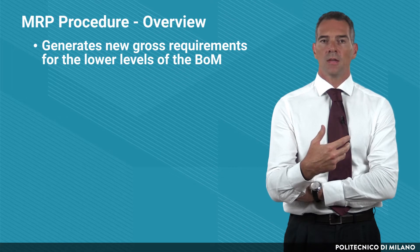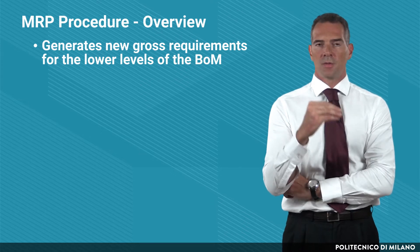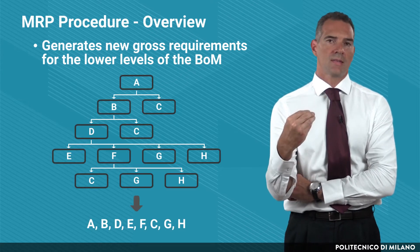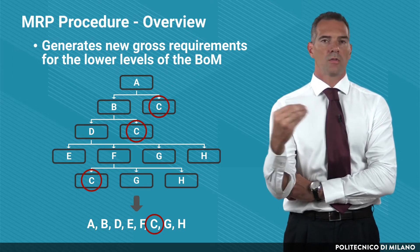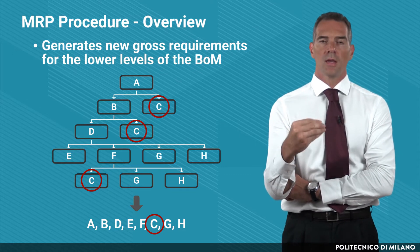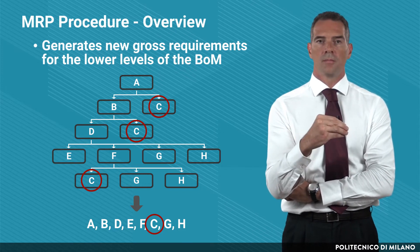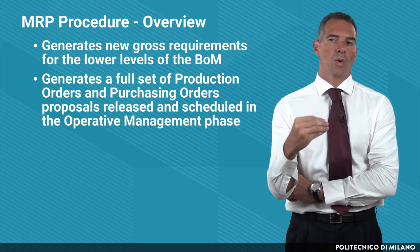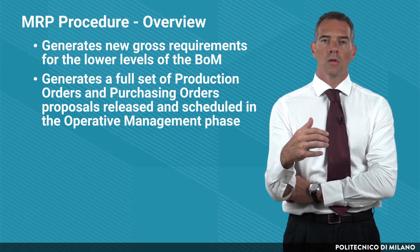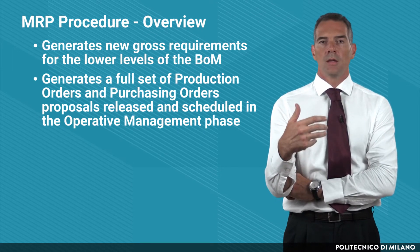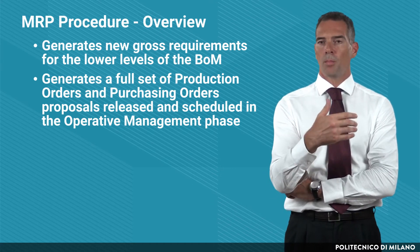For the sake of efficiency, when a component is used in more than one level of the bill of material, a specific sequence has to be arranged. In this example, component C is used at many levels of the bill of material, and therefore it is processed only after all the items requiring that component have already been processed. Materials Requirement Planning produces a list or proposal of production orders and purchasing orders, which is then processed by a human planner in the subsequent phase of order release, order planning, and order scheduling — the operative management phase.